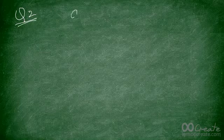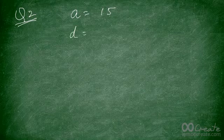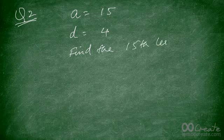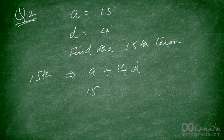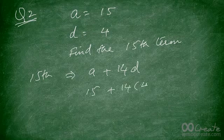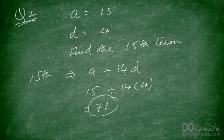Try this example: a = 15 and d = 4. Find the 15th term. The 15th term is a + 14d = 15 + 14 × 4 = 15 + 56 = 71. So the answer is 71.